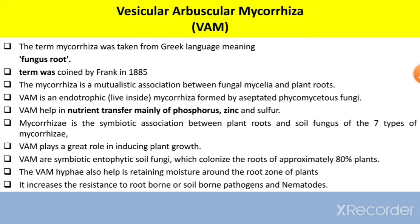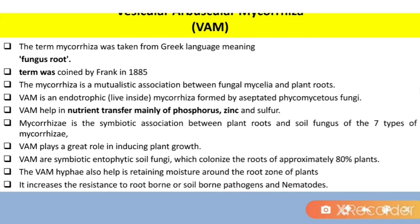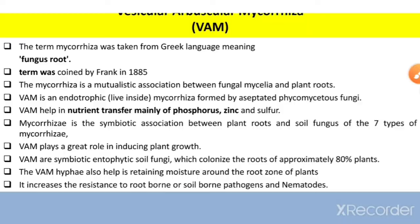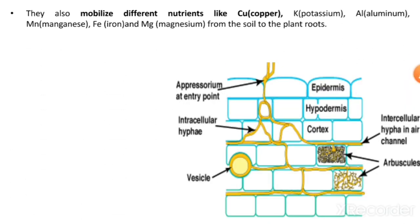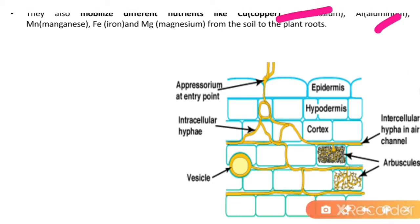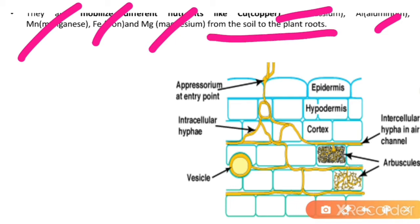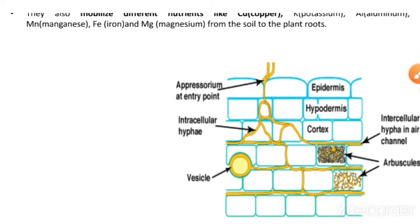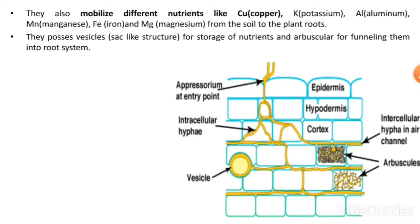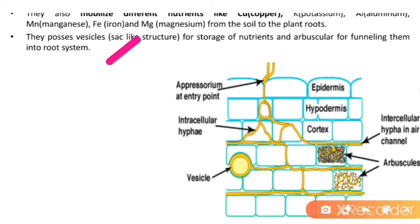VAM increases the resistance to root-borne and soil-borne pathogens and nematodes. They also mobilize different nutrients like copper, potassium, aluminium, manganese, iron, and magnesium from the soil to the plant roots.